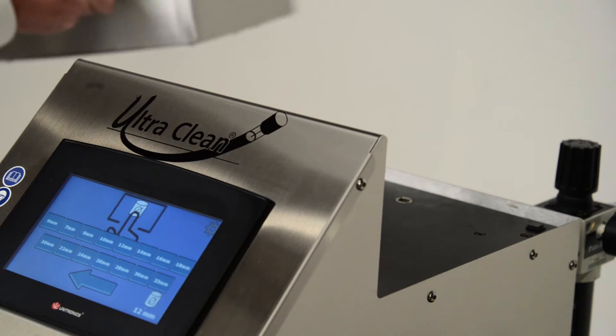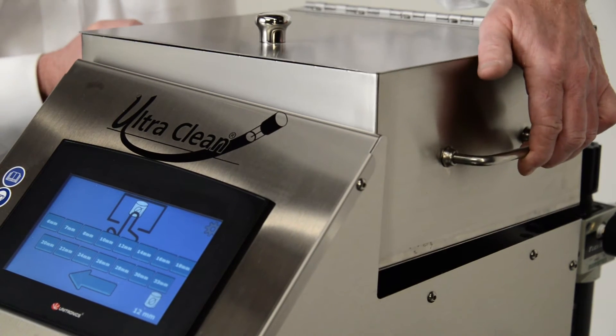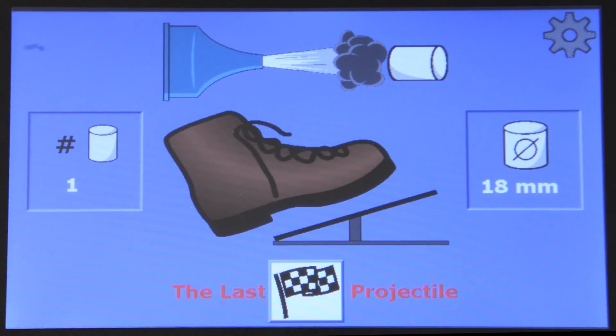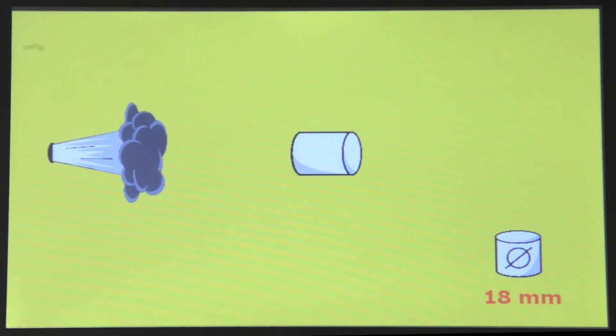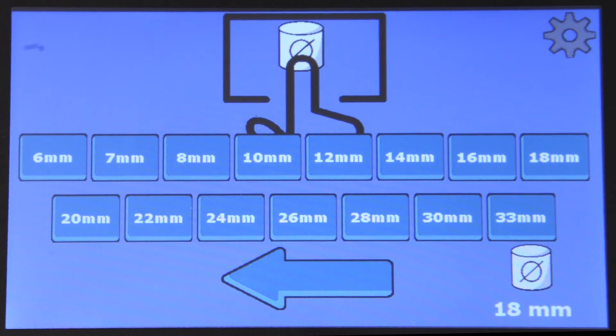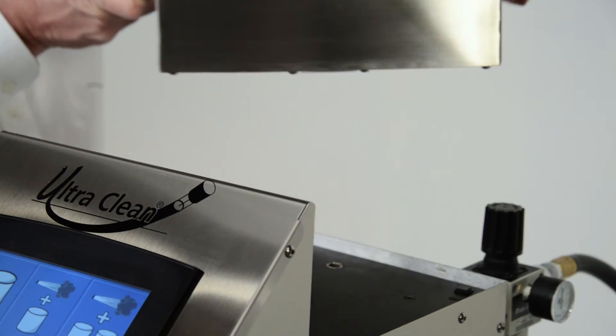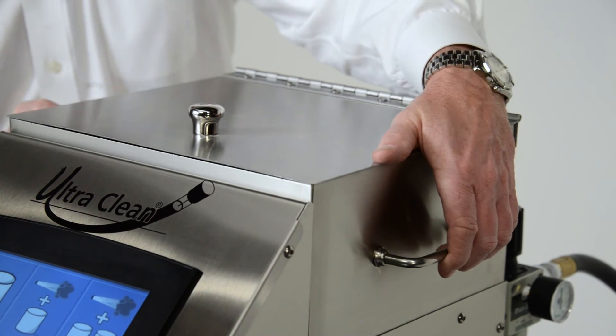Changing the projectile size and hopper box is easy. Before firing your last projectile, press the finish flag graphic. This will allow you to fire the last projectile and the system will not automatically load the next projectile after verification. You can now remove the hopper box and install the next hopper box for your new cleaning requirements.